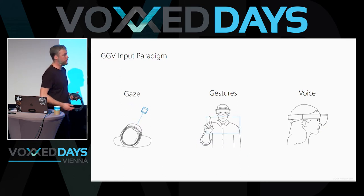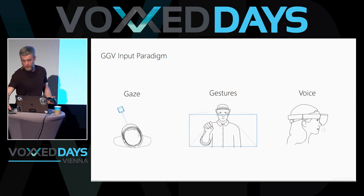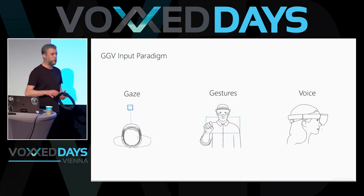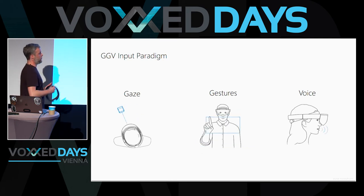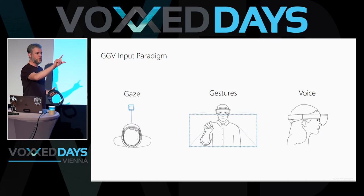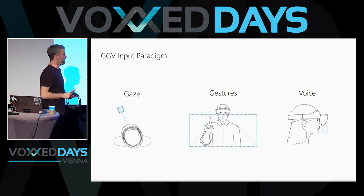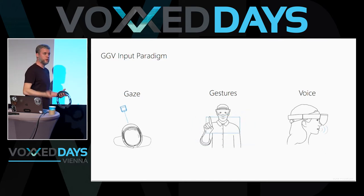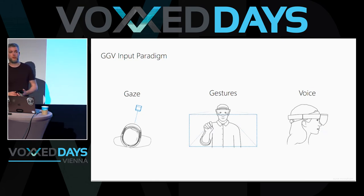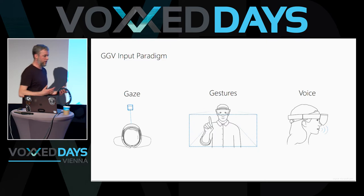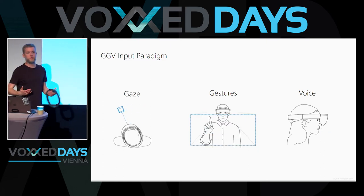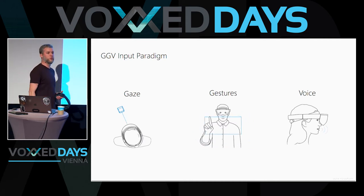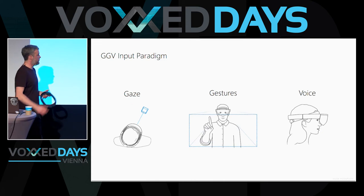We point at things with the cursor via head movement, and when something is focused, we can issue commands. One way to issue commands is gestures — the sensors track our hands and detect when the hand is in the area where gestures can be detected. For developers, there's basically one gesture to handle, which is the air tap — like pinching or catching a fly. That's the only gesture we can handle in our application; there are no custom gestures. This is a good thing, because otherwise every app would need a tutorial explaining what gestures are available.